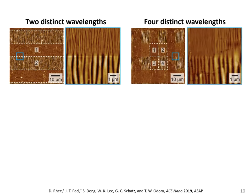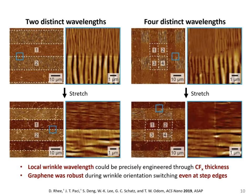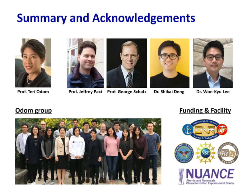Adding another cycle of area-selective fluoropolymer layer deposition produced four distinct wavelengths after graphene transfer and strain relief. Similar to graphene wrinkles with globally uniform wavelength, these multi-scale graphene wrinkles could switch orientations when the substrate was stretched. In summary, we realized multi-scale graphene wrinkles that can change wavelength and orientation at adjacent spatially selective regions under tensile strain, and reversible structural transformations were possible because cracks were suppressed during stress release cycles.